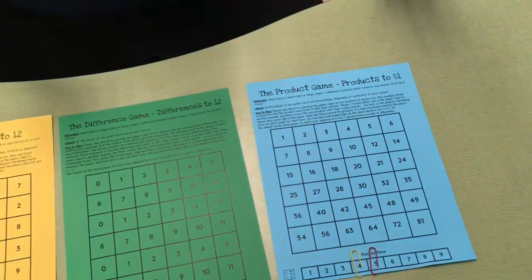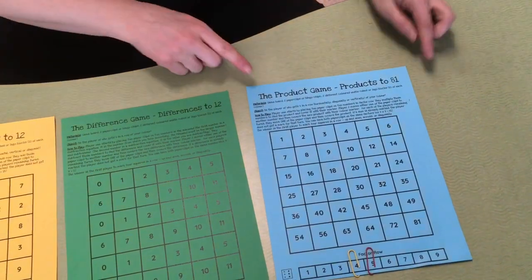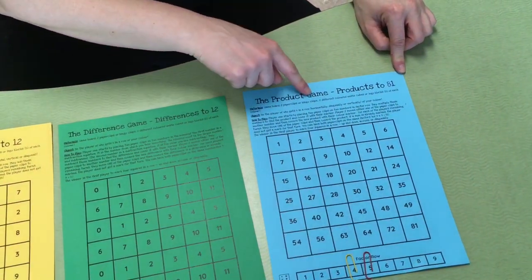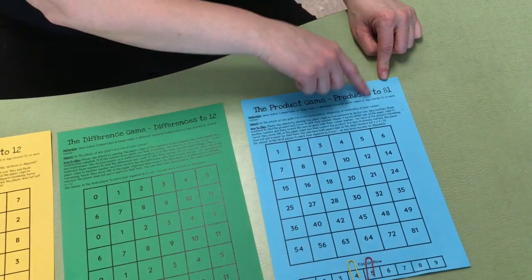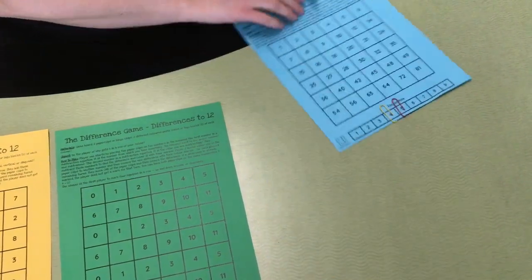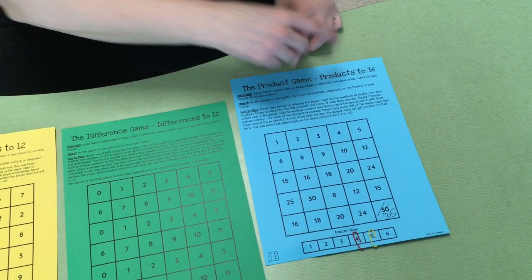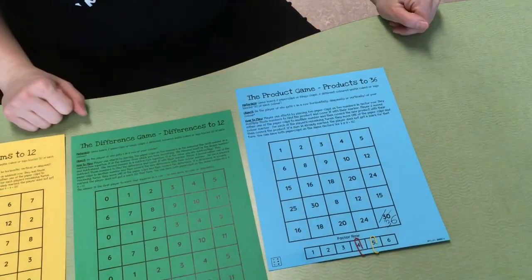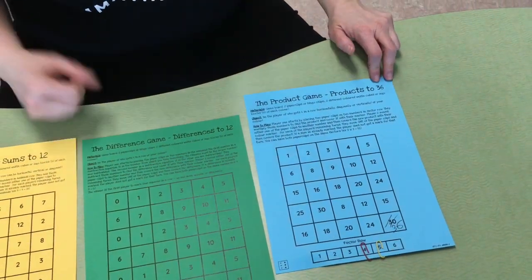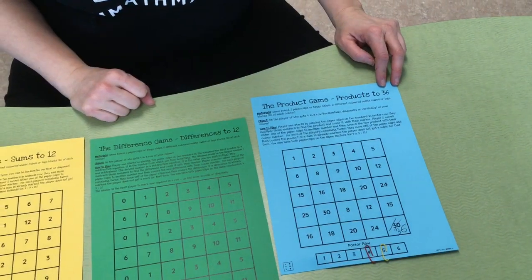We have a version - and these will all be available for free download, of course, like all of our games, for free on Teachers Pay Teachers. This is called the Product Game. This variation is for students who are going with products up to 81. And you'll notice we also have a version - for us in Alberta here they go up to five times five - well, we made a version up to 36, which of course would be six times six.